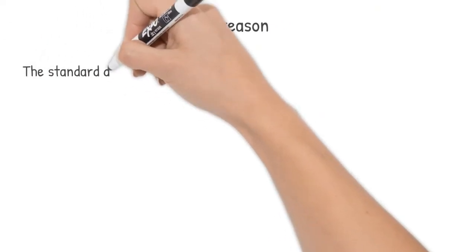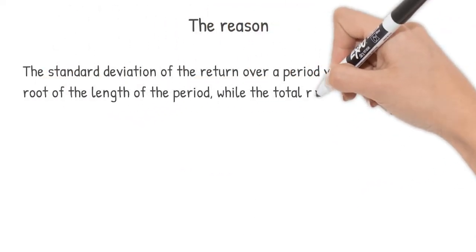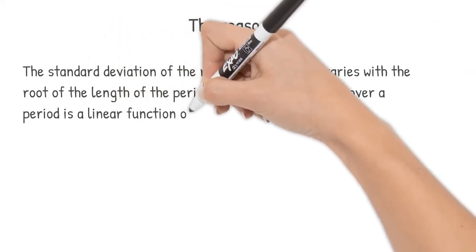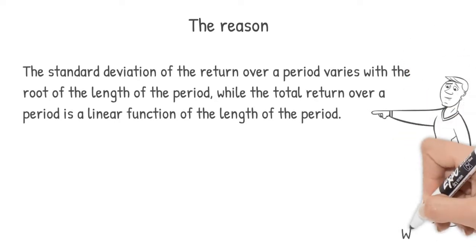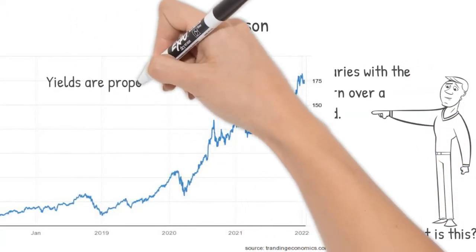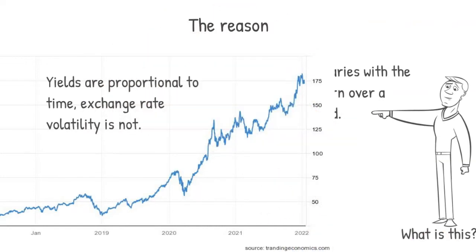Let's look at the reason behind time diversification. If I want to be very precise, I can say that the standard deviation of the return over a period varies with the root of the length of the period, while the total return over a period is a linear function of the length of the period. Before you run away, the same simplification means that if your investment returns a stable 10% over a given period, it will return 20% in twice as long a period, while the price deviates less and less from the expected return. In this way you will achieve a longer term actual return that is closer to the expected return.